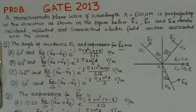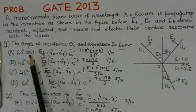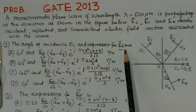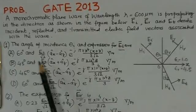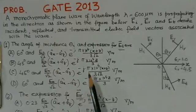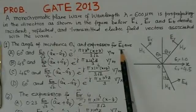What we have to find here? There are two questions, linked answer type questions. The first question is the angle of incidence θ_i and the expression of E_I are from any of these four options. So we have to find θ_i and the expression for E_I.